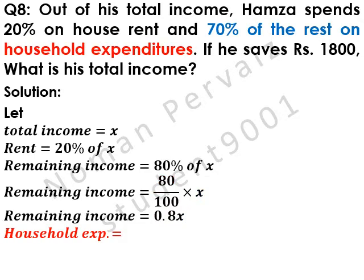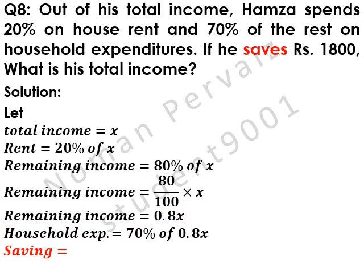Now, household expenditures are equal to 70% of remaining income, also called rest income, which is 0.8x.